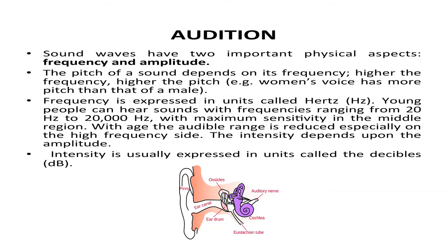Sound waves have two important physical aspects: frequency and amplitude. The pitch of a sound depends on its frequency — the higher the frequency, the higher the pitch. For example, a woman's voice has more pitch than that of a male. Frequency is expressed in units called hertz (Hz). Young people can hear sounds with frequencies ranging from 20 Hz to 20,000 Hz, with maximum sensitivity in the middle region. With age, the audible range is reduced, especially on the high-frequency side.